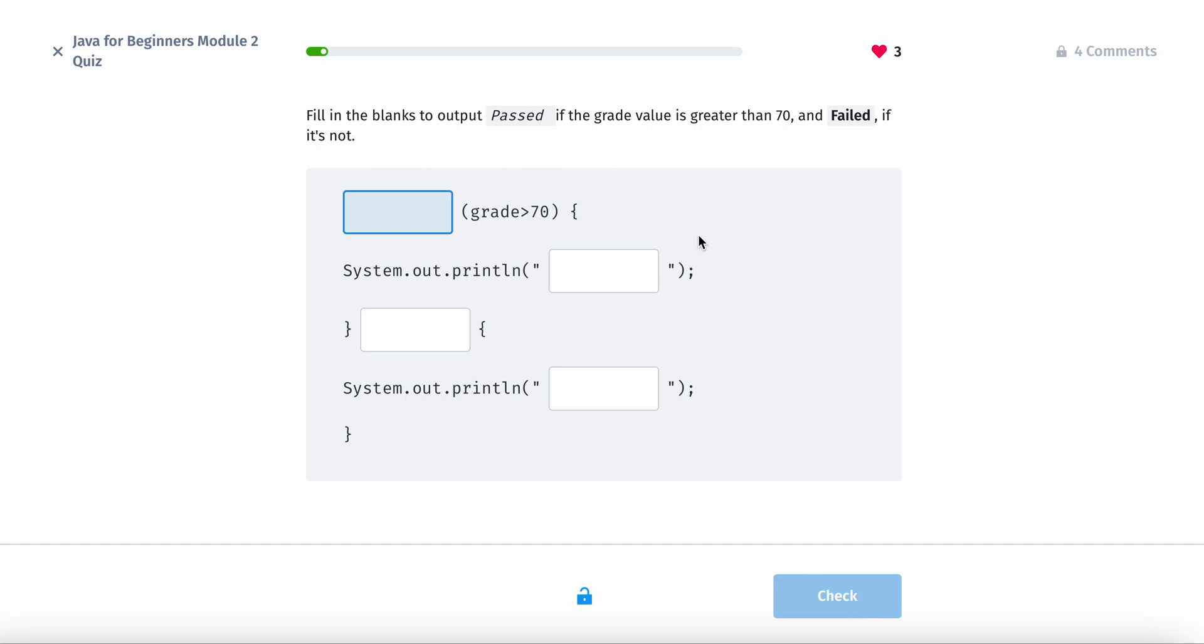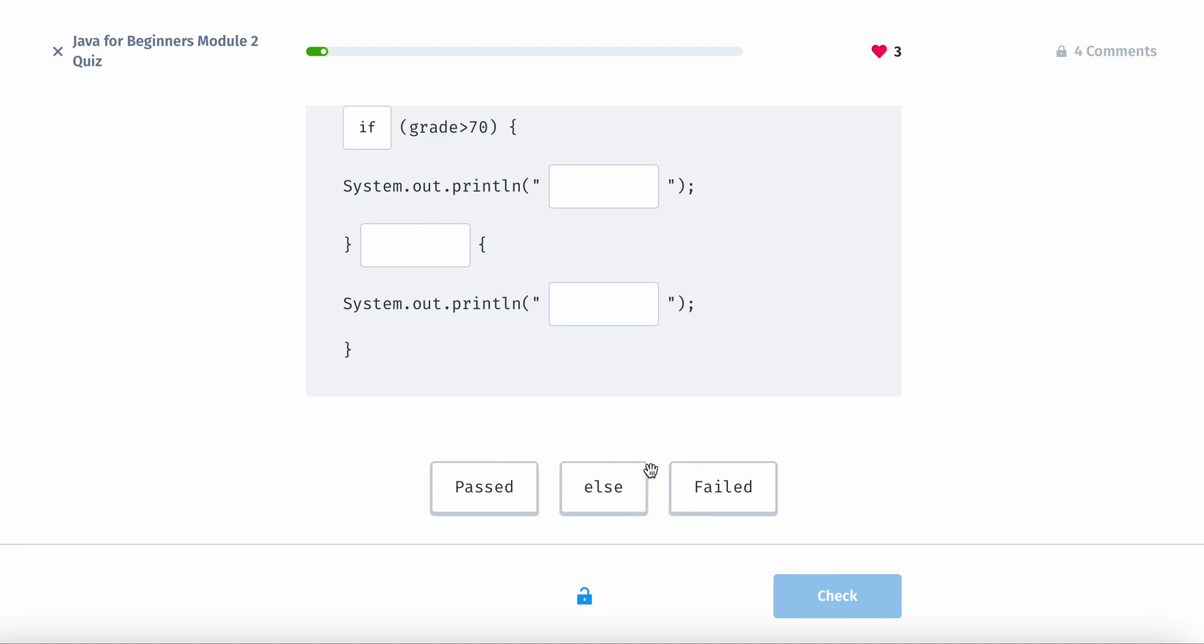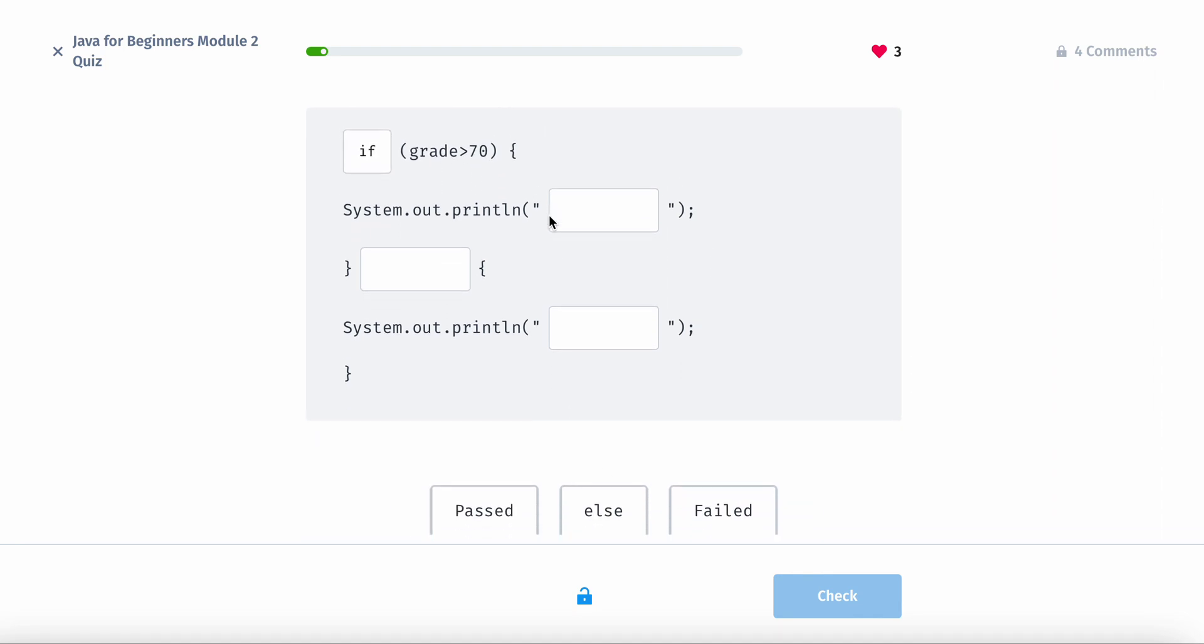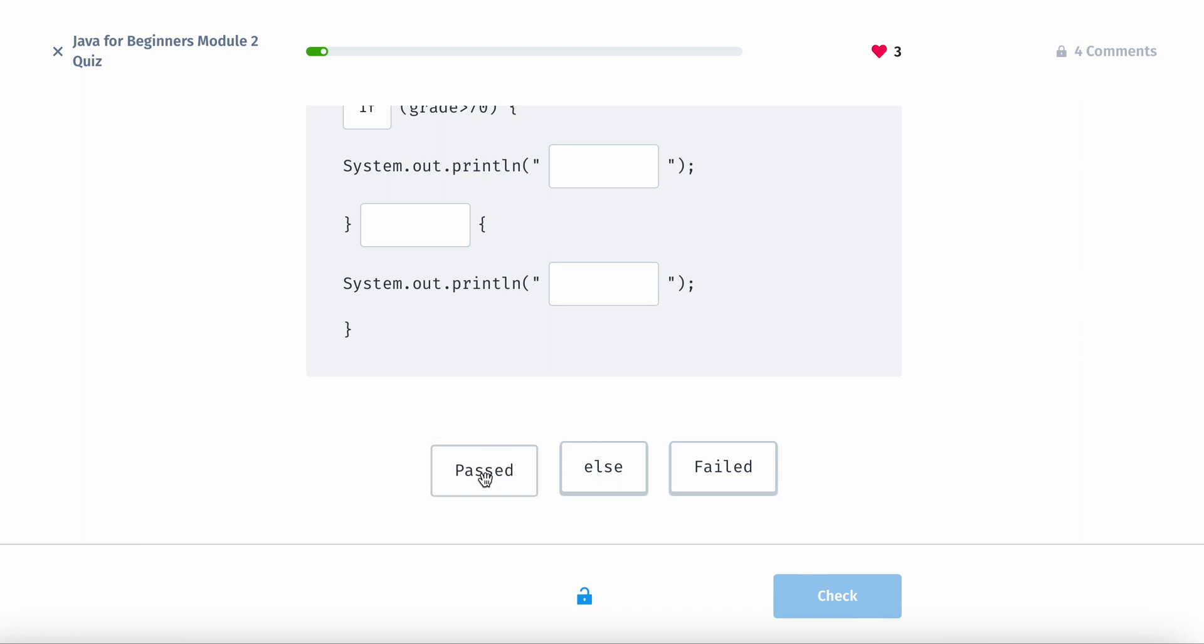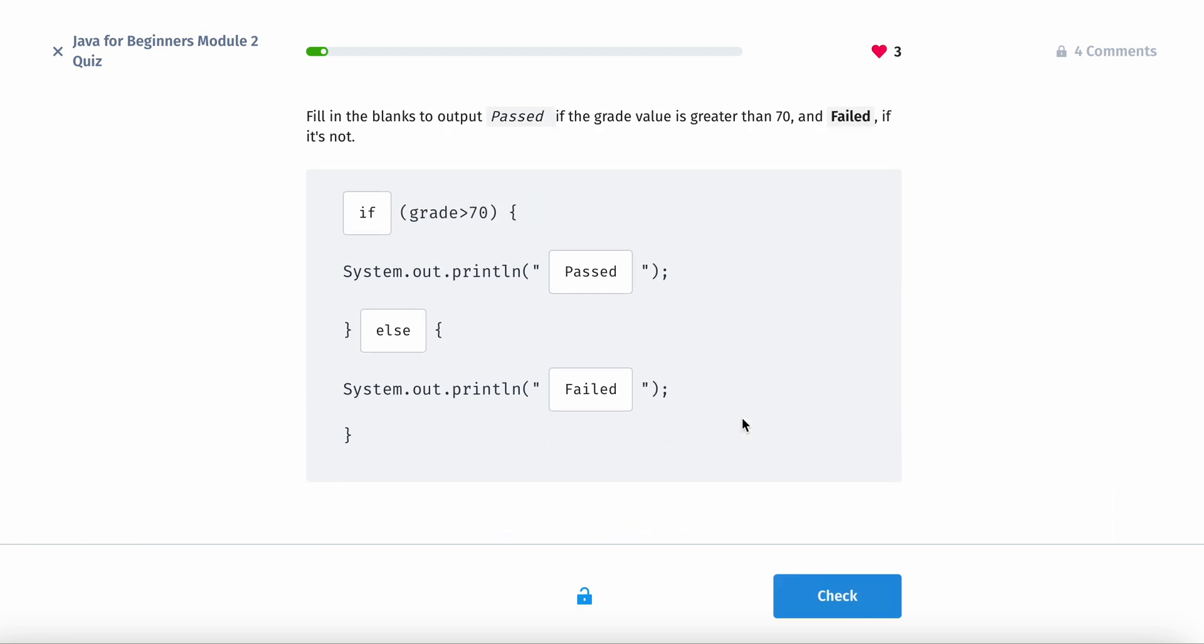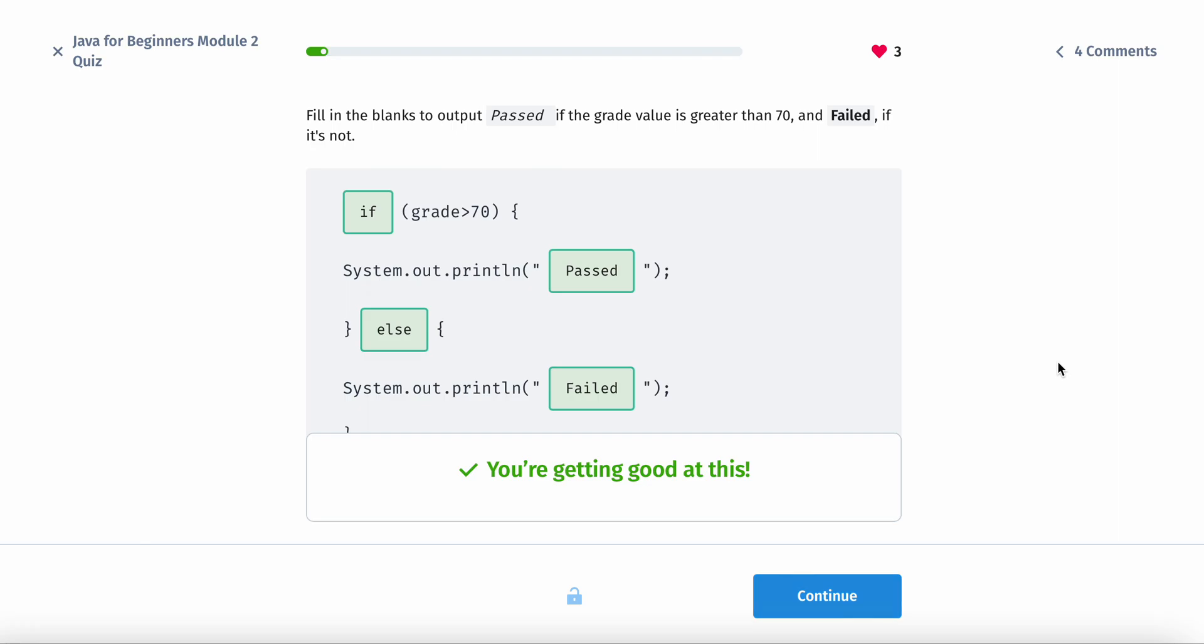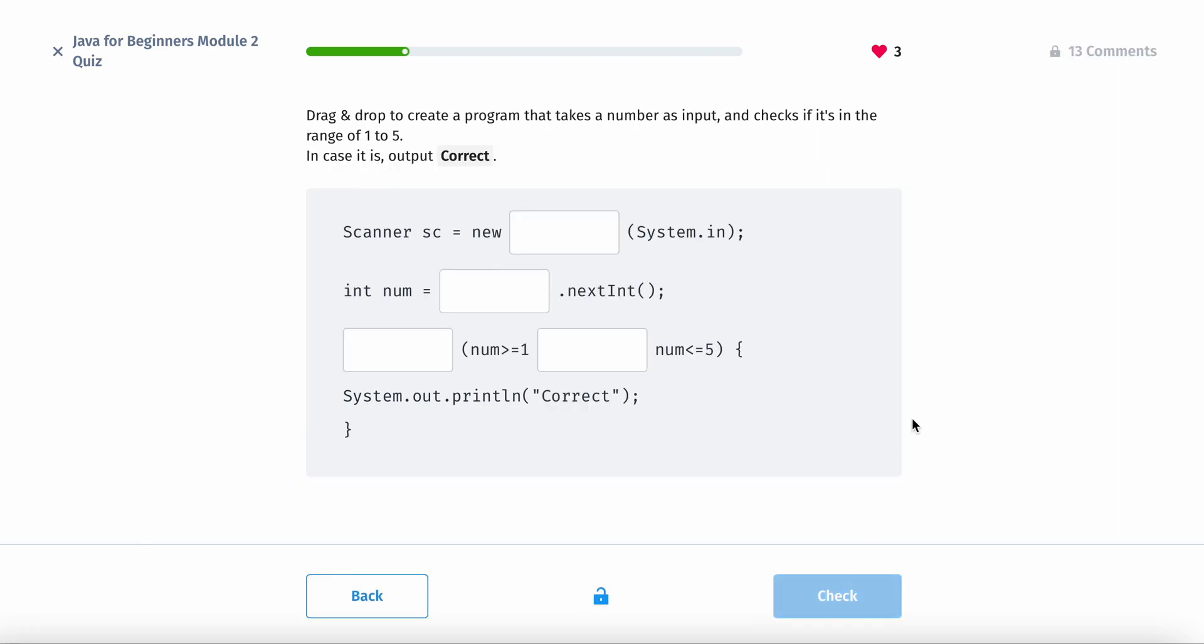So right here, we have the first question. It says, fill in the blanks to output passed if the grade value is greater than 70 and failed if it's not. So if grade is greater than 70, then we passed. Else, we failed basically. Pretty self-explanatory, not that difficult.